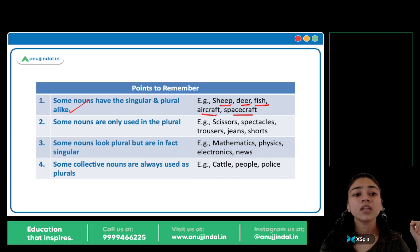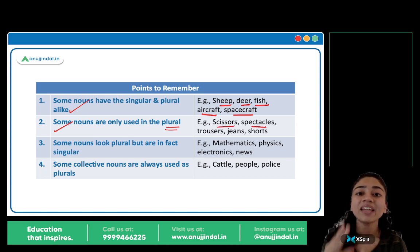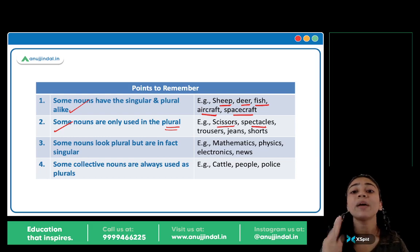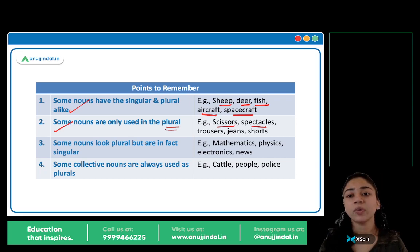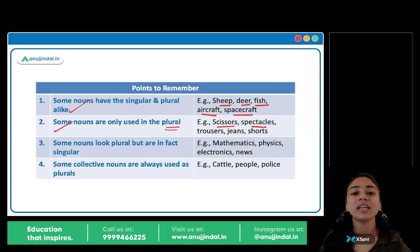Next — some nouns are only used in plural. Kuch nouns ka sirf plural form hi use hota hai. Jaise scissors — basically jo chizein pairs mein aati hain — a pair of scissors. Give me the scissors, not give me the scissor. Spectacles, trousers, pants, jeans, shorts — yeh plural mein hi aata hai, because pairs hota hai.